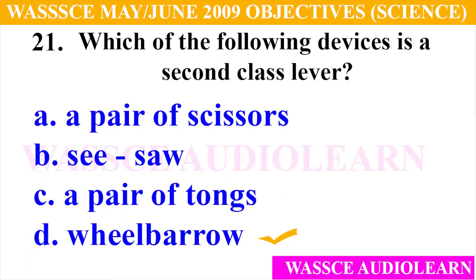Question 21: Which of the following devices is a second-class lever? A. A pair of scissors, B. Seesaw, C. A pair of tongs, D. Wheelbarrow. And the answer is D, wheelbarrow. A wheelbarrow is a second-class lever.